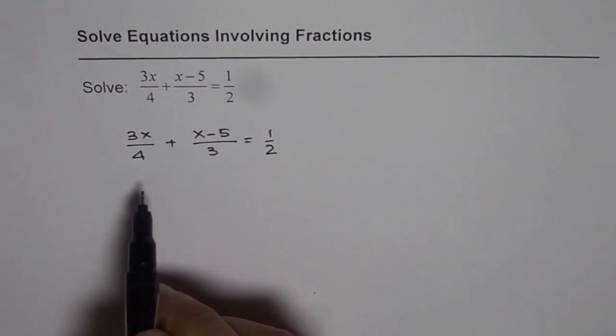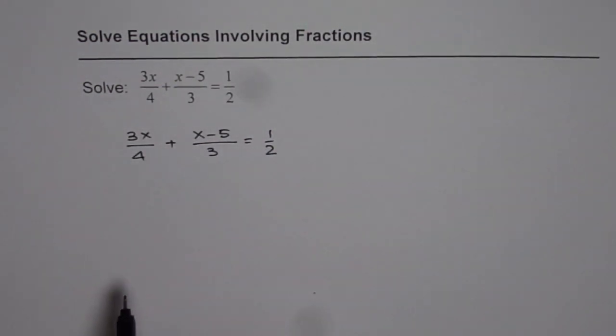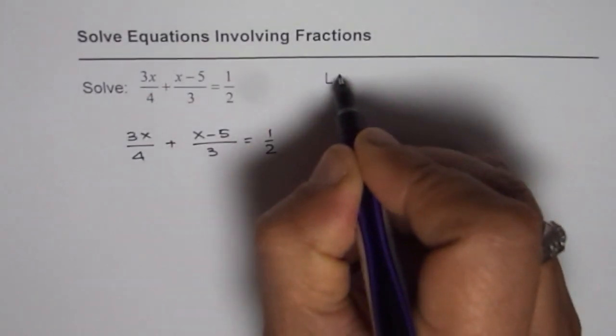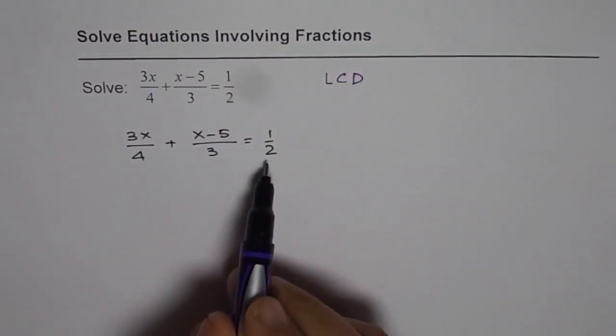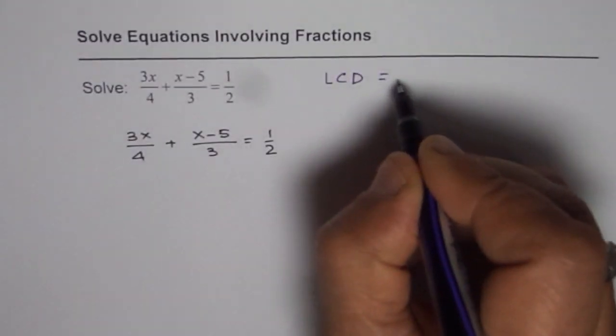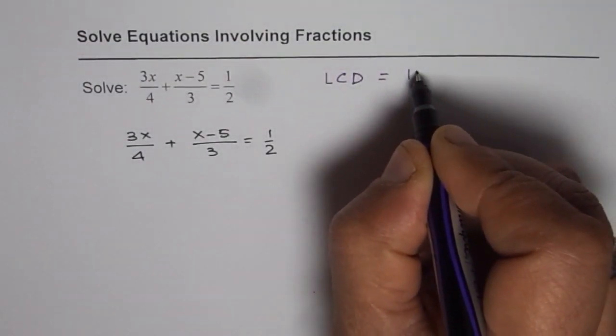Now the strategy here is to get rid of fractions. For that you need to find the lowest common denominator. The numbers are 4, 3, and 2. So for these numbers the lowest common denominator is 12.